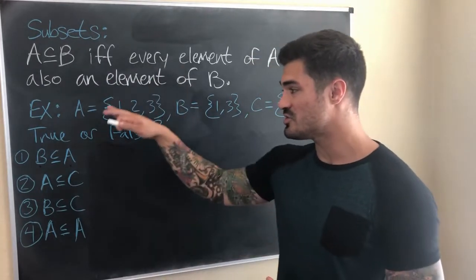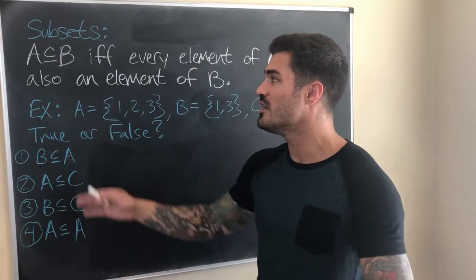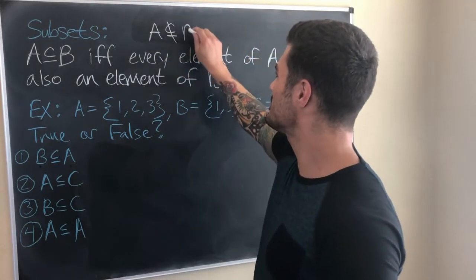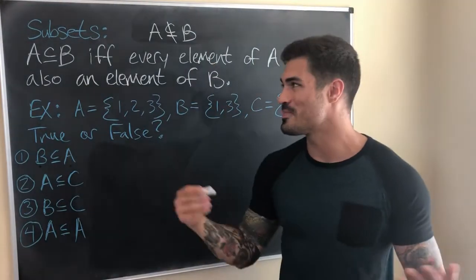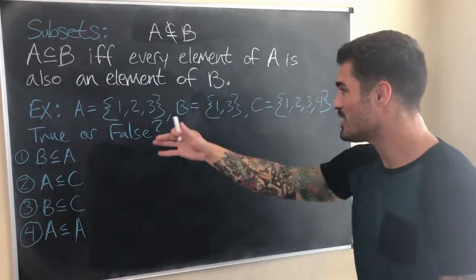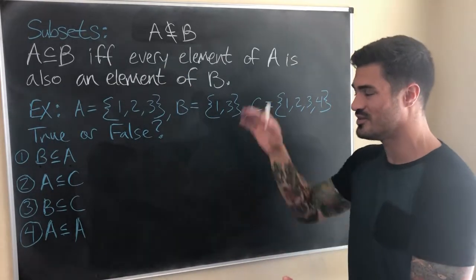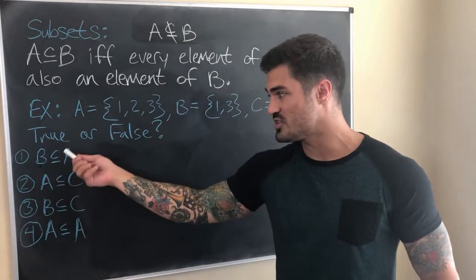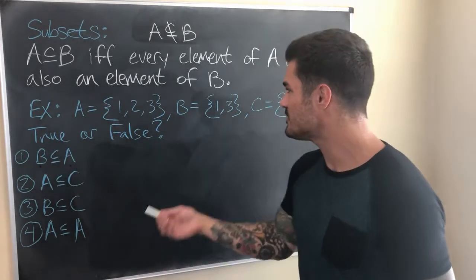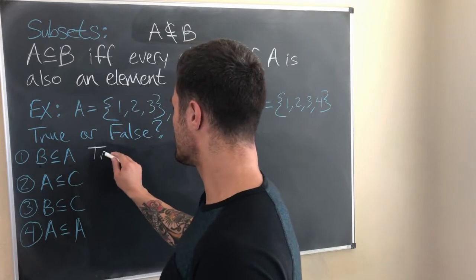Let's answer some true or false questions. We're given three sets. Is B a subset of A? We check: is every element of B also an element of A? B has the elements 1 and 3. A also has the elements 1 and 3. Yes — this is true. B is a subset of A.